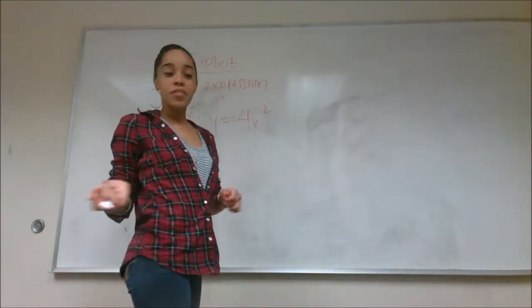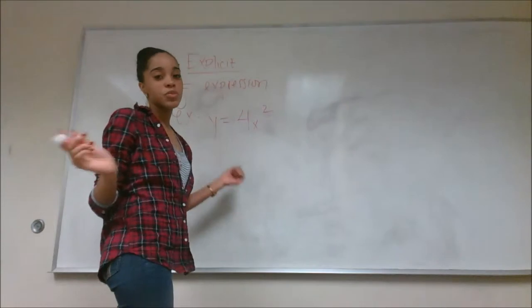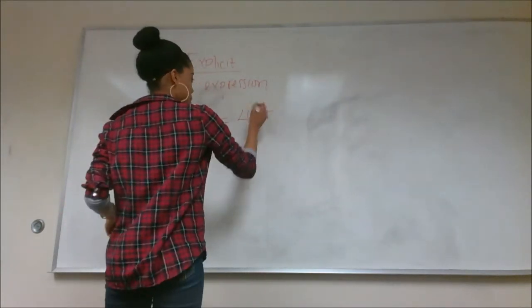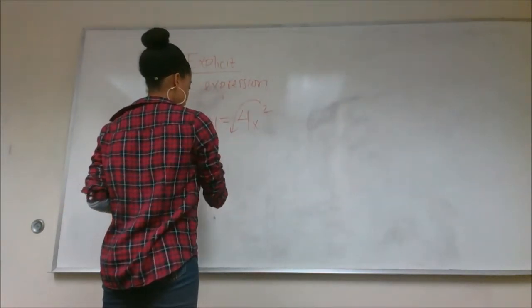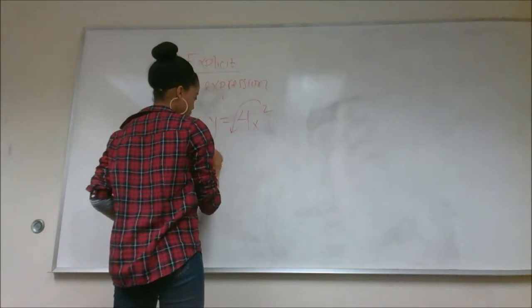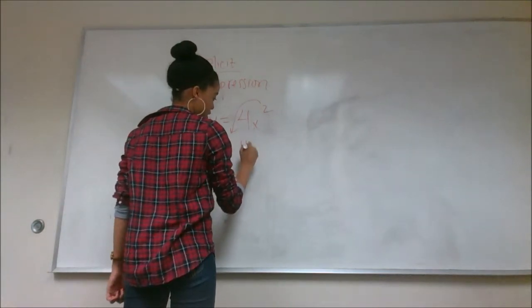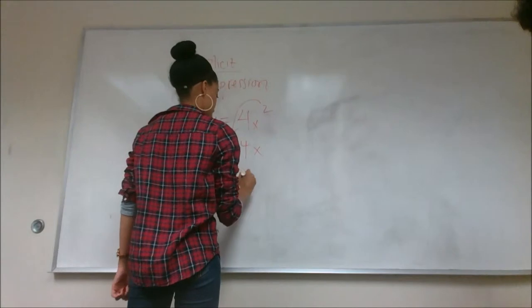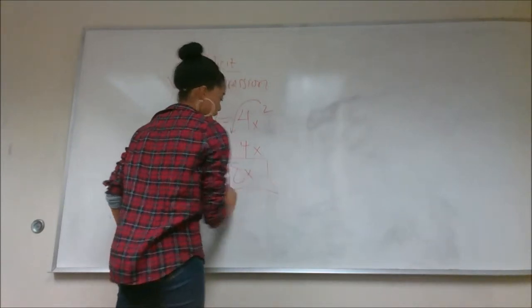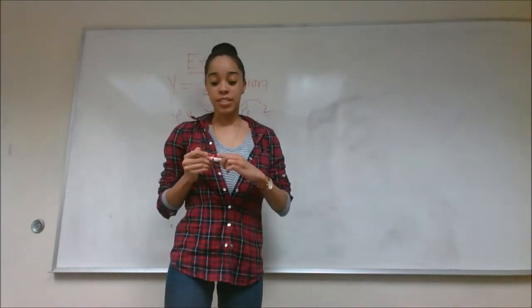To find the derivative or the y prime of this, you would just use your power rule, bring that 2 in front of the 4. So y prime would equal 2 times 4x. And so your final answer would be 8x. Now like I said, this is called explicit.